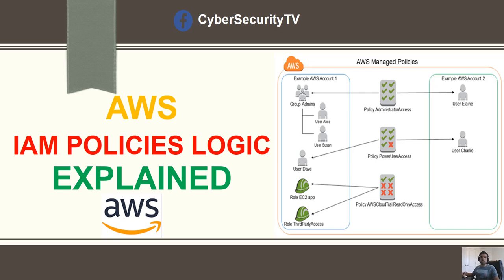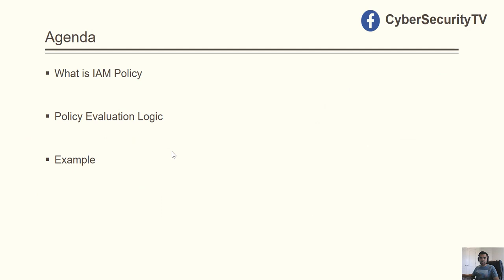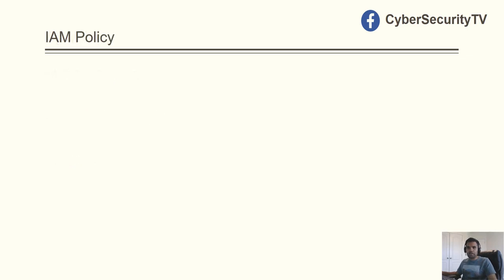We'll cover what the decision tree looks like, and also discuss implicit versus explicit deny — how IAM policy makes the decision whether to allow or deny access. This is very basic but also very critical, and our focus will be mostly on the policy evaluation logic and examples of how that logic applies.